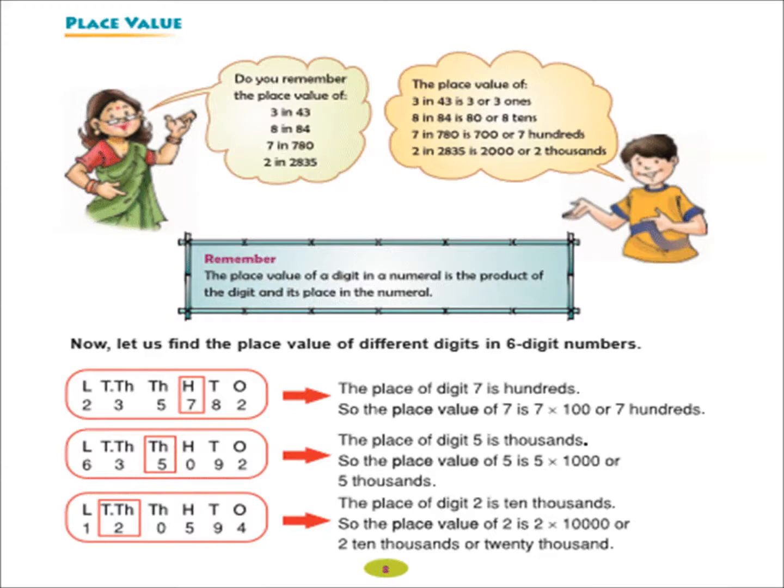And the last one is 1,20,594. Here, 2 is highlighted here. It means you have to find out the place value of digit 2. So, the place of digit is at 10,000. So, the place value of 2 is, 2 will be multiplied by 10,000 and your answer is 20,000. So, you can say that the place value of 2 is 20,000.